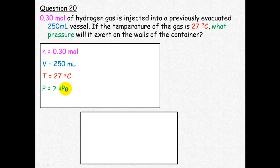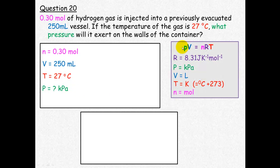We're looking for the pressure, and we're using PV equals nRT, so we also know the ideal gas constant is 8.31.